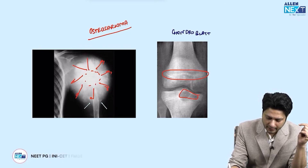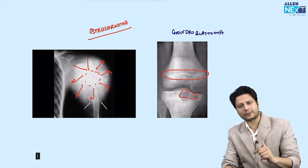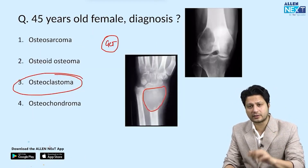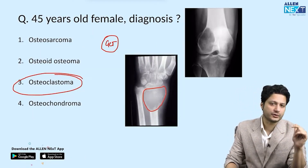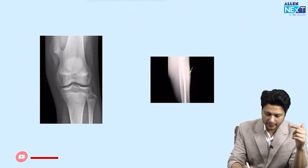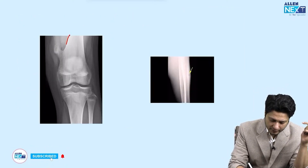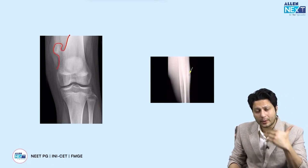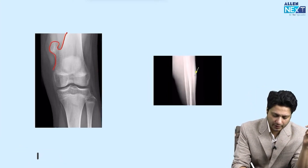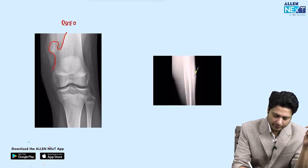To summarize: epiphysis tumor with growth plate visible → chondroblastoma; epiphysis tumor with growth plate obliterated → giant cell tumor. If there is a tumor projecting from the metaphysis of a long bone, growing away from the joint, the answer is osteochondroma.